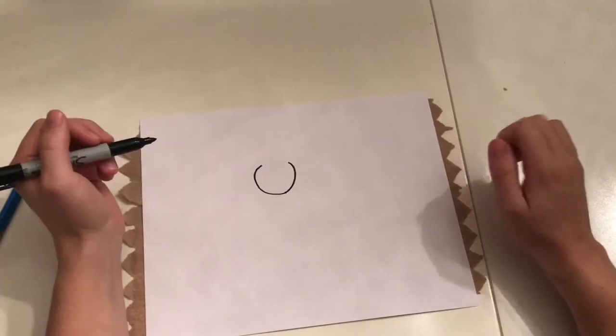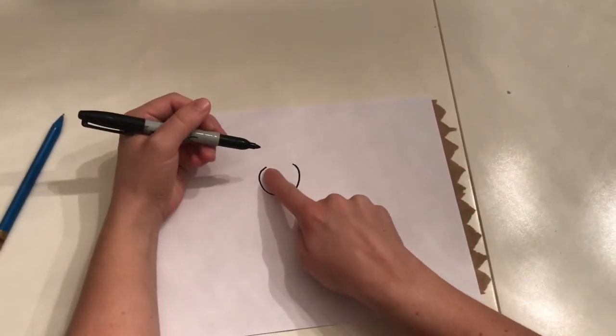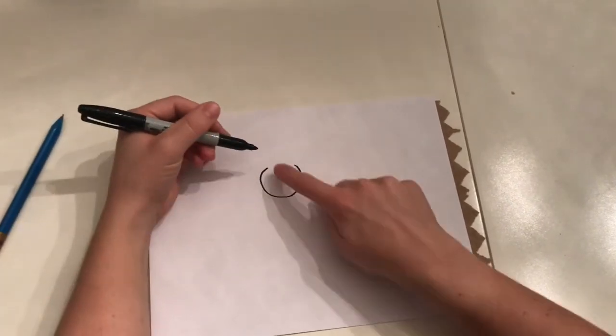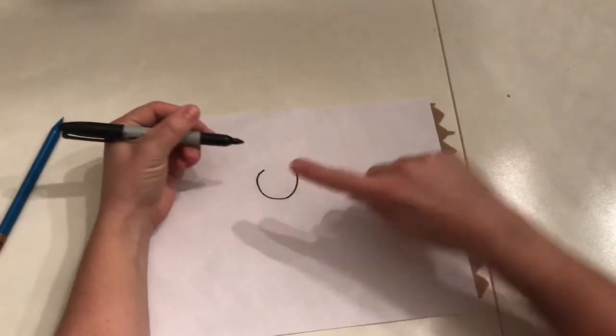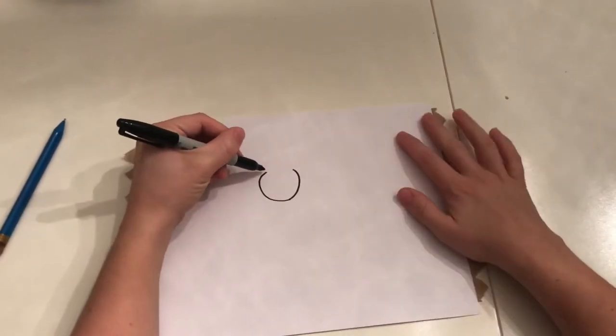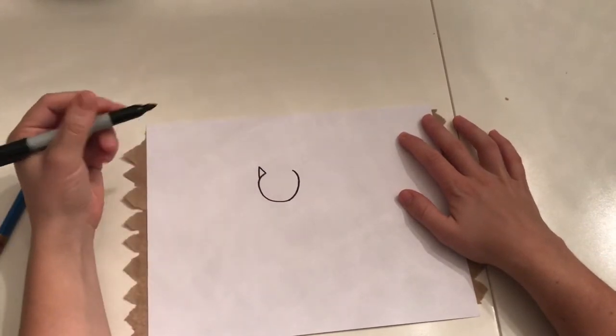Then we're going to draw the ears. And it's going to be two triangles. I'm going to start it right at this point where I stopped my O, my circle. And I'm going to draw it back so that it can touch back onto the circle. So I draw it up and back onto the circle.